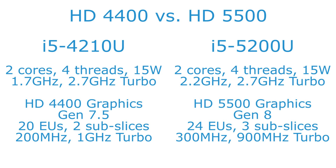These are both 15-watt chips with similar specs on the processor side. But looking at the graphics, the HD4400 is Gen 7.5 with 20 execution units spread across 2 subslices, a 200MHz base clock, and 1GHz maximum turbo speed.